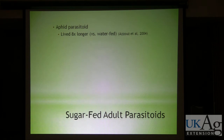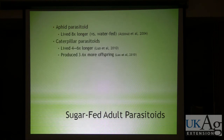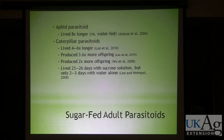Many researchers have demonstrated how important sugar resources are for many types of parasitoids. In one study, they looked at one species of aphid parasitoid and fed it a sugar solution versus only water. With sugar, they lived eight times longer versus water alone. Similarly, in another study with caterpillar parasitoids, they lived four to six times longer and produced 3.6 times more offspring. In yet another study, parasitoids produced two times more offspring, and with another species they lived 23 to 26 days when provided with a sugar solution.